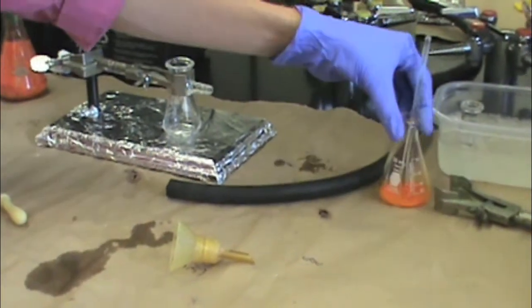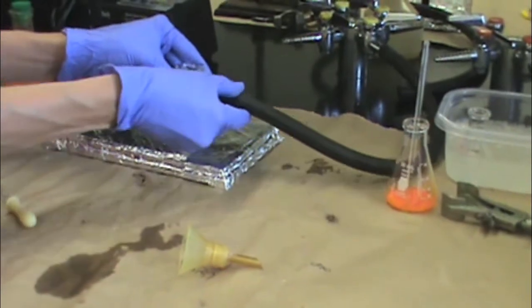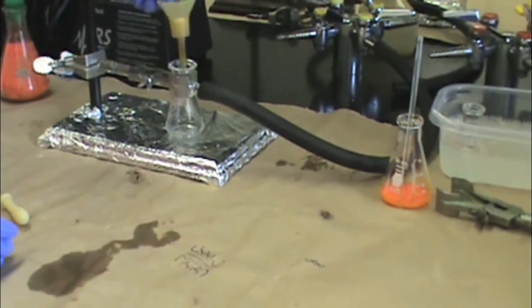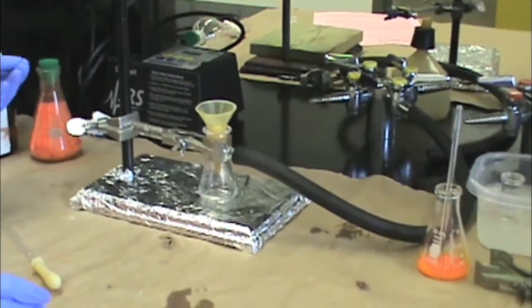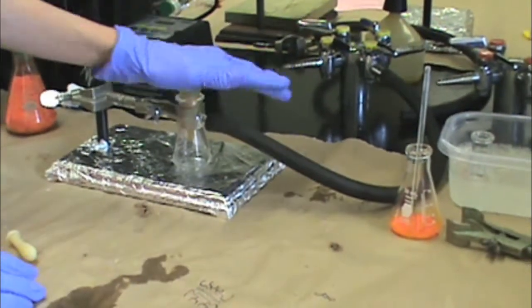Then attach your vacuum hose to your sidearm flask, put the Hirsch funnel in the flask, and turn on the vacuum. You should check that you have good suction.